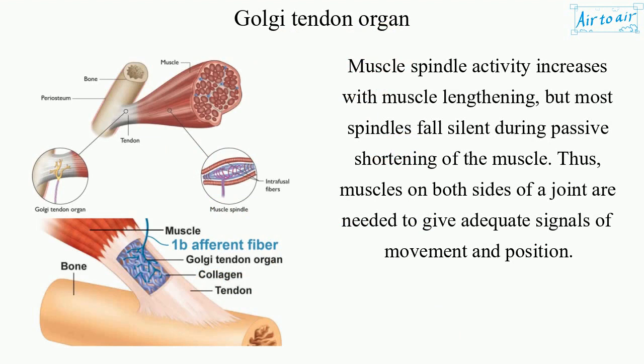Muscle spindle activity increases with muscle lengthening, but most spindles fall silent during passive shortening of the muscle. Thus, muscles on both sides of a joint are needed to give adequate signals of movement and position.